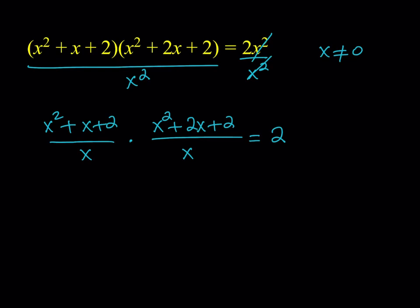Now after this, there's a reason why we split up the x and divide like that. Because let's divide everything by x here. We're going to get x plus 1 plus 2 over x. And the other expression is going to give us x plus 2 plus 2 over x. And the product is equal to 2. Hopefully you got the method by now.